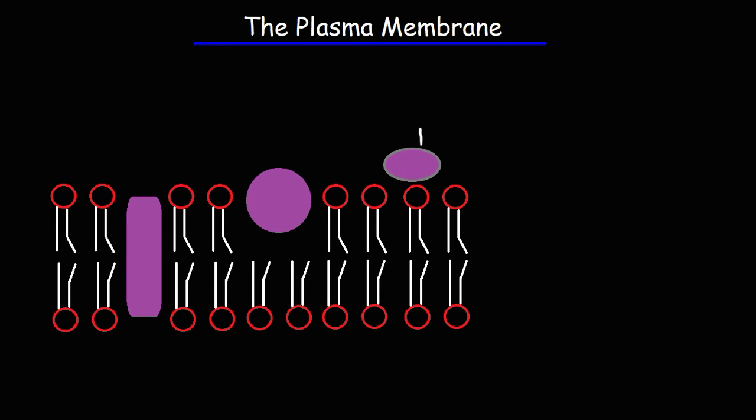Now on the cell membrane, you'll find carbohydrates attached to proteins. When you see that, this is called a glycoprotein. Glyco for carbohydrate and then protein. So that's a glycoprotein. Now, when a carbohydrate is attached to a lipid, in this case a phospholipid, this is going to be called a glycolipid.